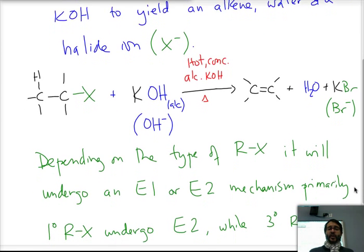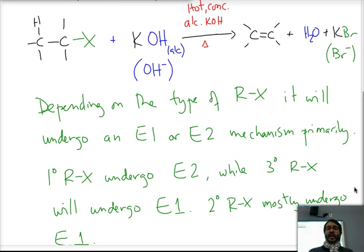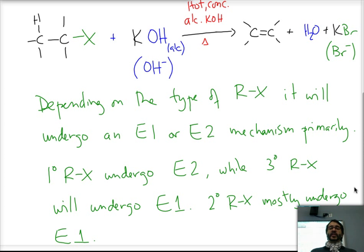The type of halogen alkane will actually determine the type of mechanism that the reaction will undergo. If it's a primary halogen alkane, the reaction will undergo mostly E2 elimination bimolecular in which both the bond breaking and the bond forming are happening concertedly, happening at the same time. In the case of secondary halogen alkane, they will mostly undergo elimination unimolecular E1. That means that there will be separate bond breaking and bond forming steps.